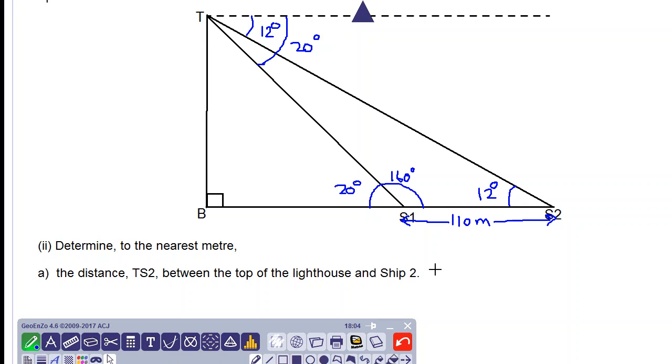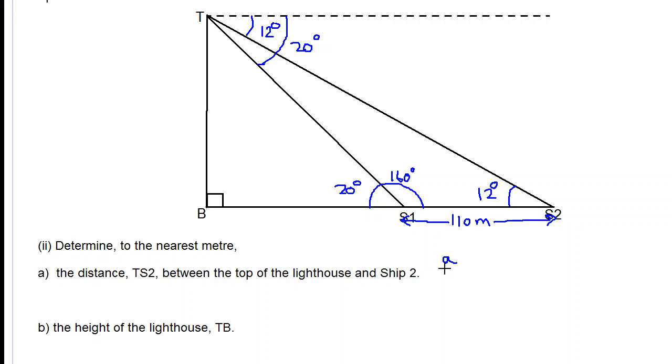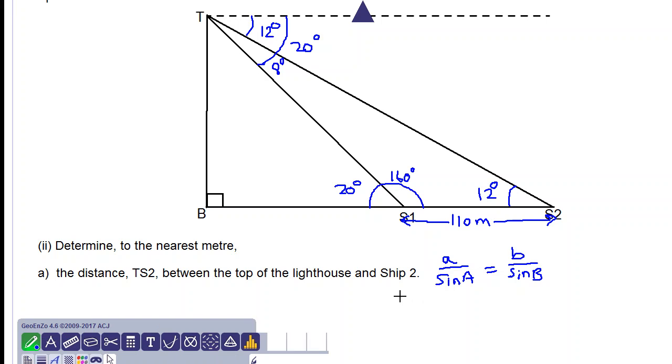So what we do is we use the sine rule and we say a over sine A equals b over sine B. So we have all the angles within this triangle. This angle here will be 20 subtract 12 which is 8 degrees. Okay, and if we add up 160, 12 and 8 we will get 180 degrees. So let's go ahead and use our sine rule now.